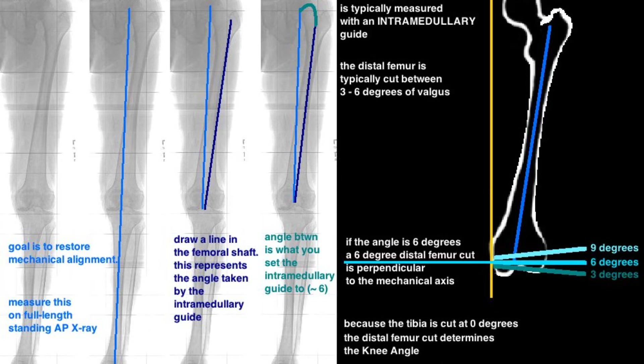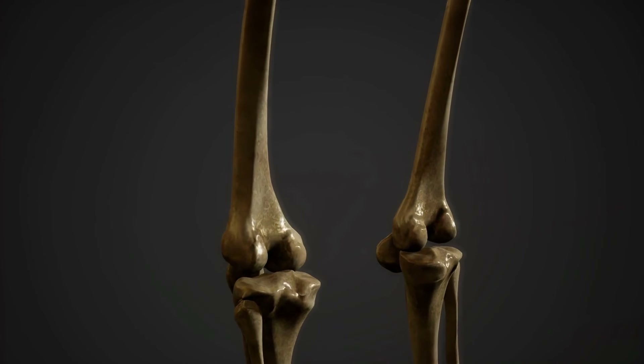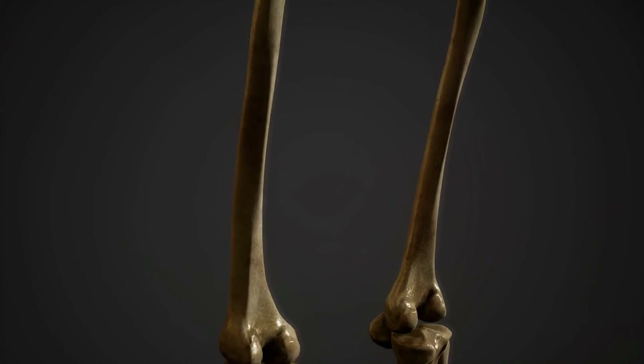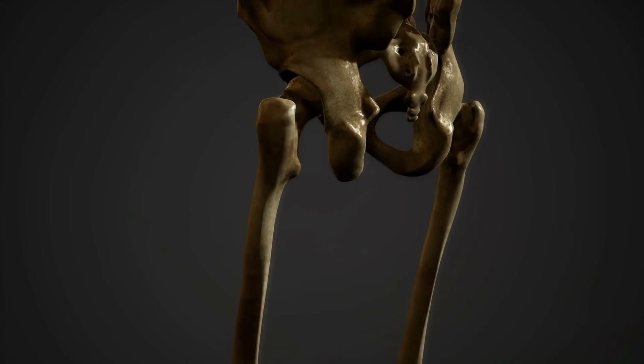When you cut the distal femur, you are affecting three things: mechanical alignment, the extension gap, and the joint line height.